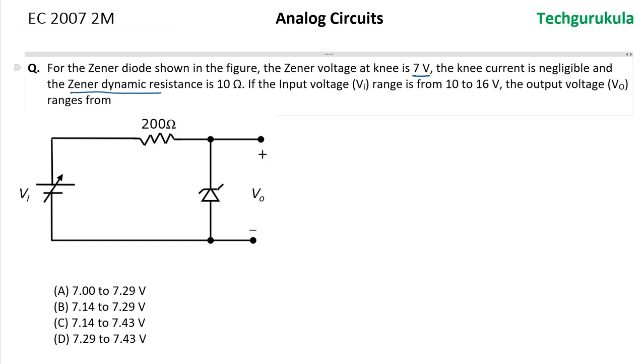In this case, the Zener dynamic resistance is given as 10 ohms. If the input voltage Vi ranges from 10 volts to 16 volts, the output voltage ranges from what? First of all, let's look at the Zener diode characteristics in the given circumstances.